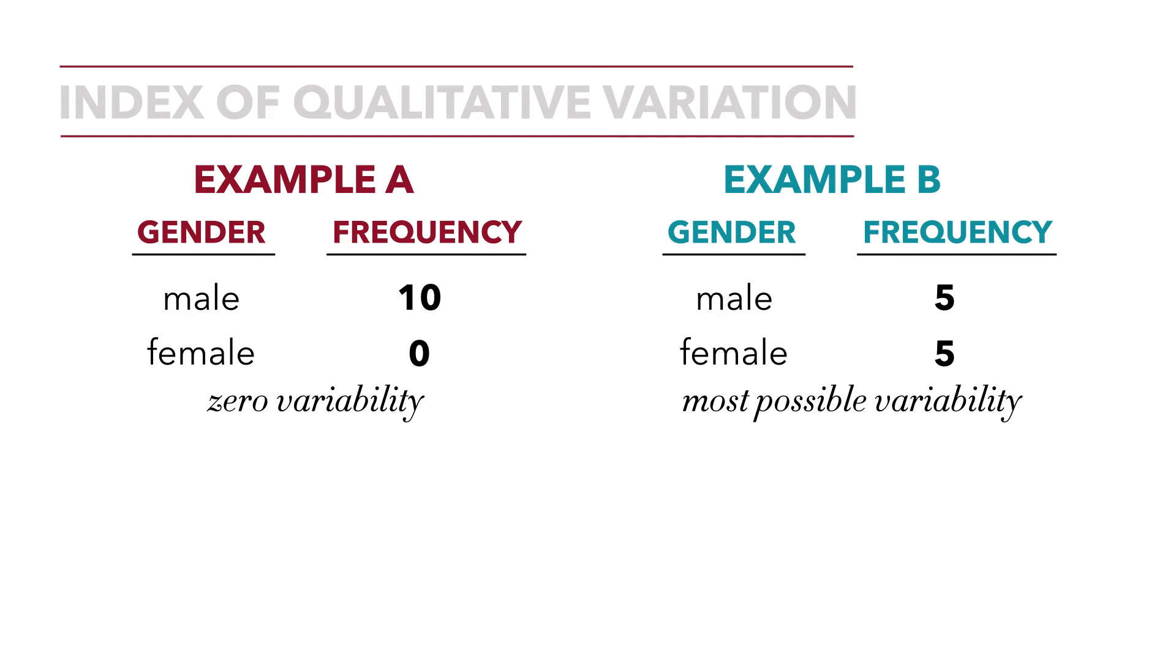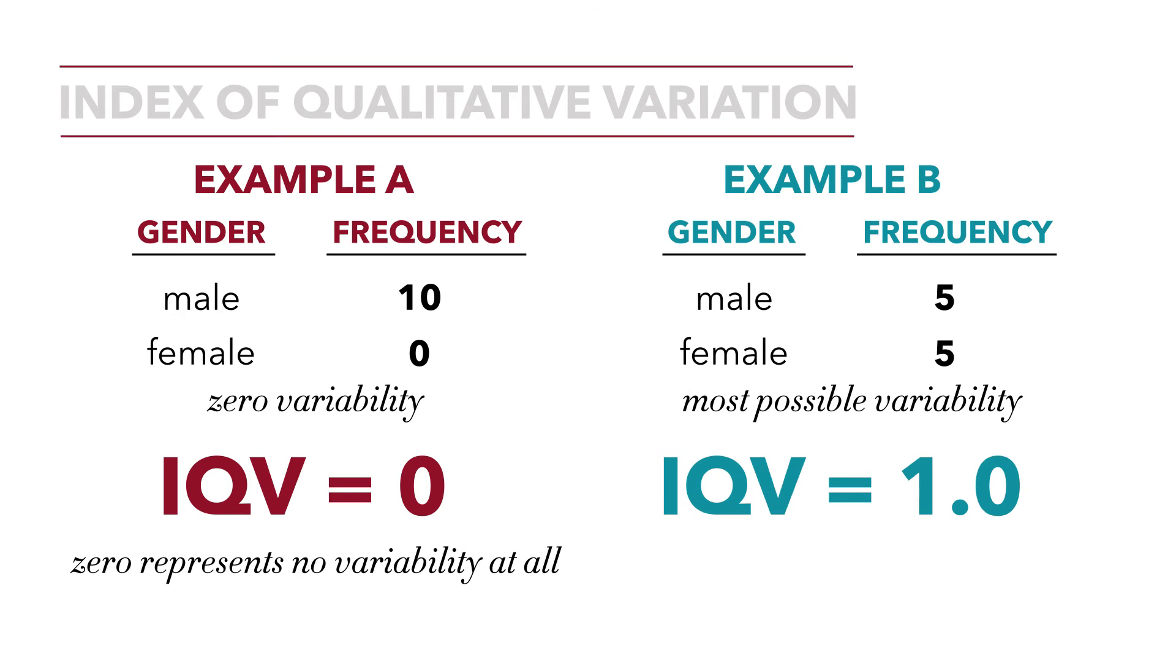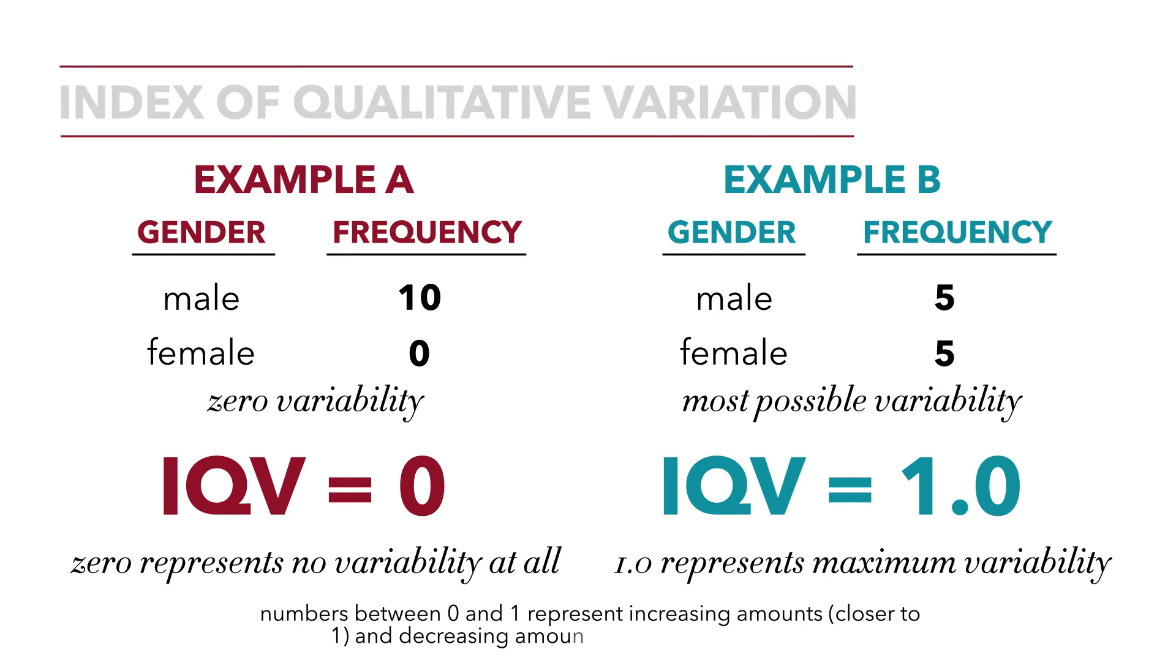So in case A, the first case, our IQV should compute to zero. And in the second, our IQV should compute to 1.0. So IQV has the property that zero represents no variability at all, and 1.0 represents maximum variability. Numbers between zero and one represent increasing amounts of variability as we move closer to one, and less variability as we move closer to zero.